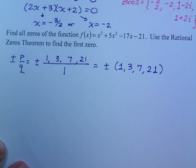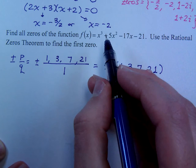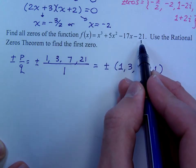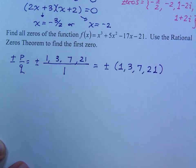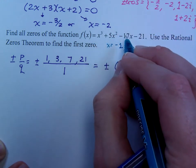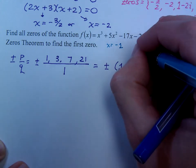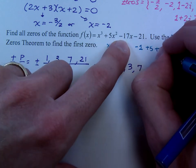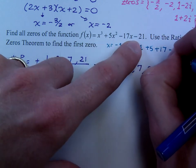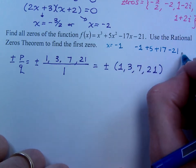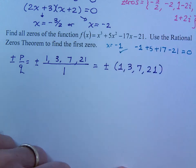Now, the easiest 0 to check is 1, and you can check that just by adding the coefficients. 1 plus 5 minus 17 minus 21 does not equal 0. So, it's not a 0. But, we can check negative 1. To check negative 1, change the sign of the coefficients of the odd degrees. So, that means negative 1, keep this guy positive, change this sign, keep this guy the way it is. When I add all of this, I end up with 0, so that tells me that this guy is a 0.